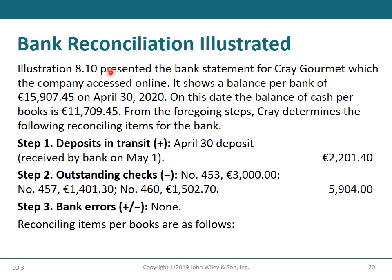Bank reconciliation illustrated: Illustration 8.10 presents the bank statement for Kerry Company, accessed online. It shows a balance per bank of €15,907.45 on April 30, 2020. On this date, the balance of cash per books is €11,709.45.